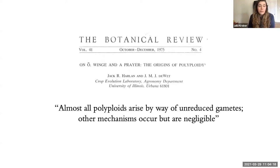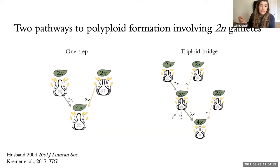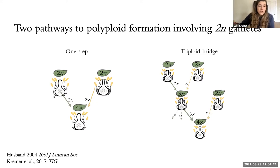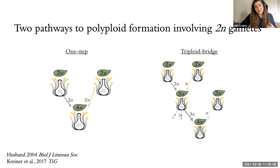A seminal review from Harlan and deWet from 1975 was the first to say that almost all polyploids arise by way of unreduced gametes, though other mechanisms may occur but are negligible. There are two key ways in which unreduced gametes can unite to form new polyploids — a one-step and a two-step process. In the one-step process, a diploid female produces an unreduced ovule and a pollen from a hermaphroditic individual is also unreduced; when these two unreduced gametes come together, you produce a polyploid individual.